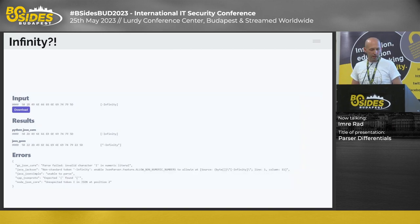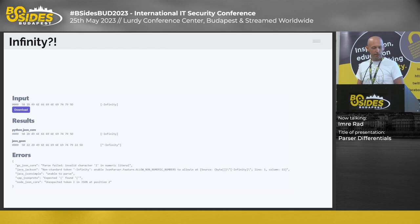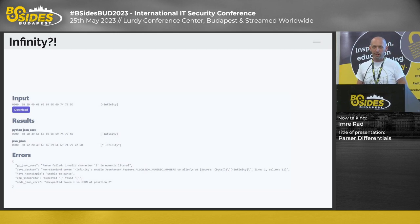Infinity is not a token that is part of the JSON specification. Still, Python is perfectly happy to accept this input. And another parser, JSON for Java, is just robust enough to turn it into a string. I was quite surprised when I saw this Infinity token — I just never thought it would be supported by any JSON parser anywhere.